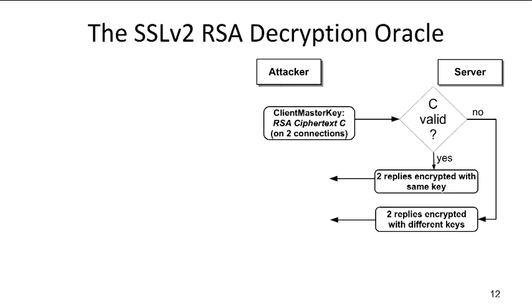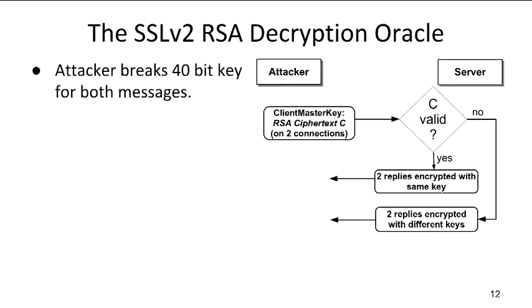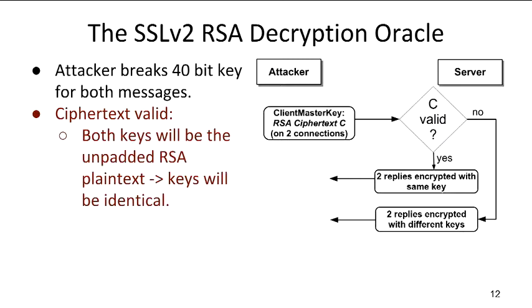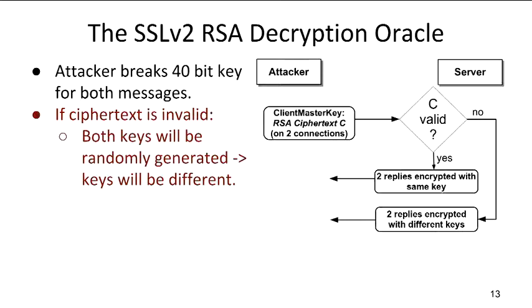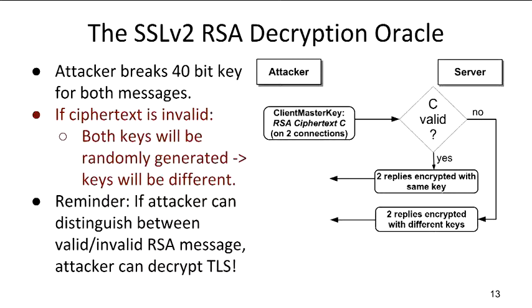The attacker can break the 40-bit keys for both replies and compare them. If the ciphertext is valid, the keys will be the same. If the ciphertext is invalid, the keys will be different. So after all this trouble — connecting with the ciphertext twice, breaking keys for both replies, and comparing them — the attacker manages to squeeze out one little bit of information: whether a given ciphertext is valid or invalid. But we know from Bleichenbacher's attack that an attacker who can do this can decrypt RSA and therefore decrypt TLS. This one bit of information breaks TLS security.